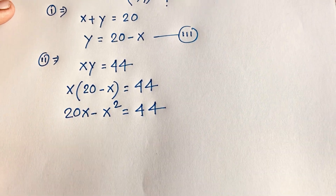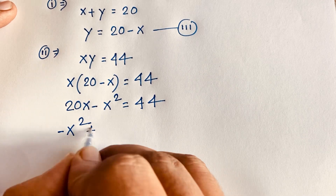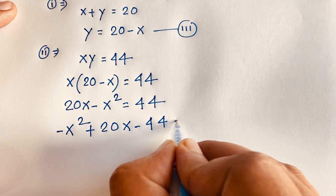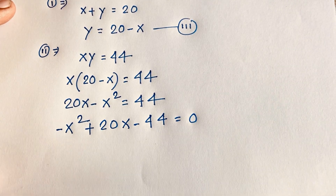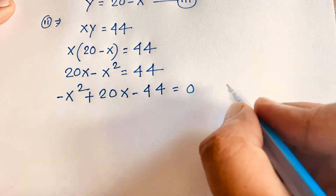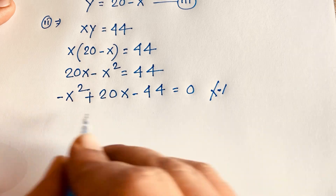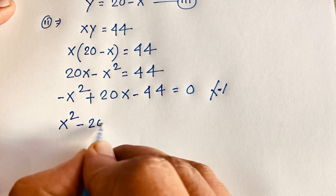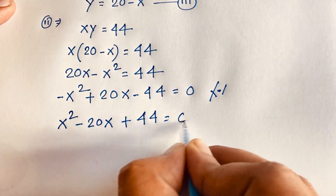This is a quadratic equation. Rearranging: minus x squared plus 20x minus 44 is equal to 0. Multiplying both sides by negative 1, we get x squared minus 20x plus 44 is equal to 0.